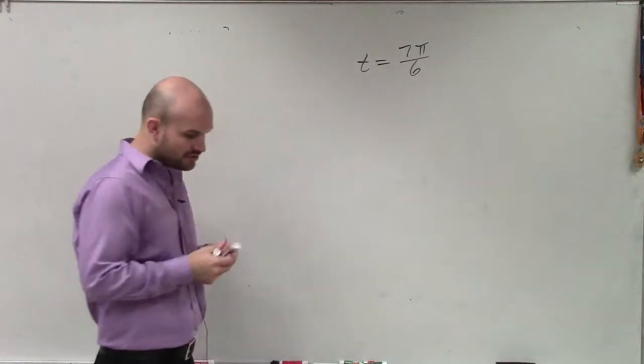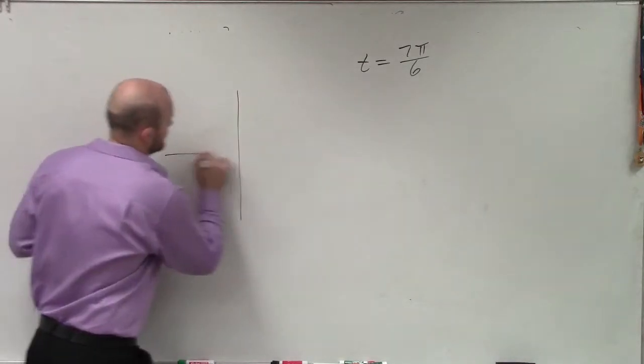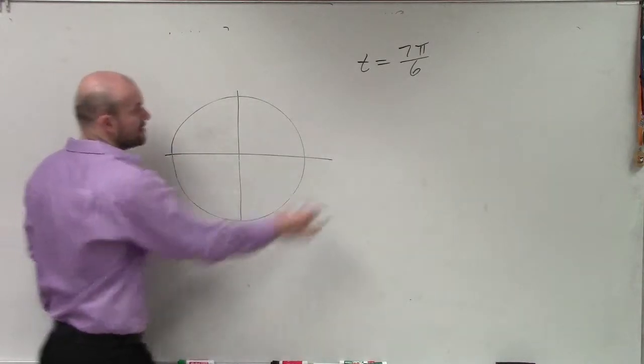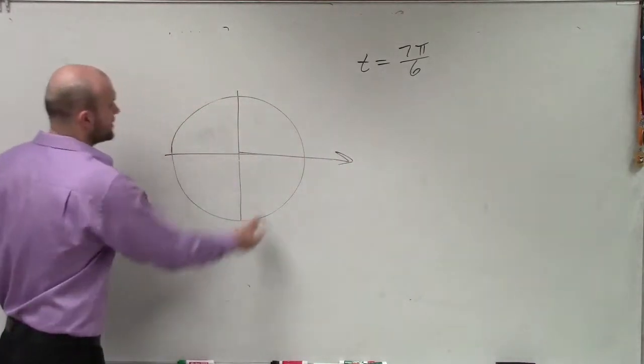So here what we need to do is first determine where the angle is. To determine the angle, remember we have our unit circle. I look at my denominator. If I'm going to start here, which is my initial side, I'm going to rotate around.